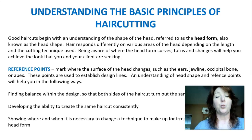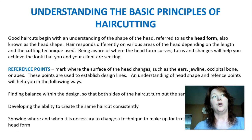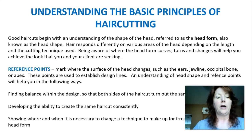Reference points mark where the surface of the head changes, such as the ears, jawline, occipital bone, or apex. These points are used to establish design lines. Understanding head shape and reference points helps you find balance so both sides turn out the same, and develop the ability to create the same haircut consistently — knowing, for example, whether you left more or took away weight at the occipital bone each time.